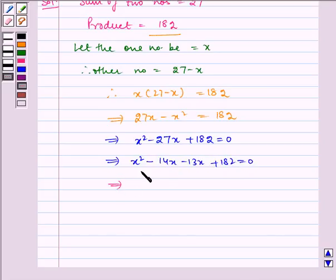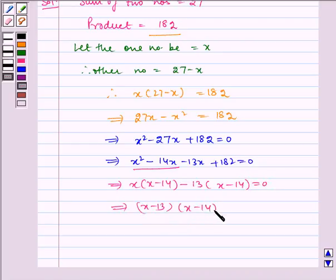Which implies, taking x common we get x minus 14, taking minus 13 common we get x minus 14, which is equal to 0, which implies x minus 13 into x minus 14 is equal to 0.